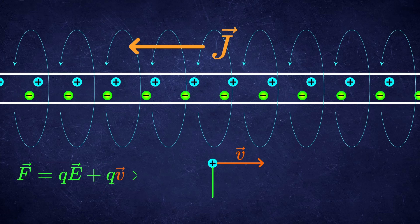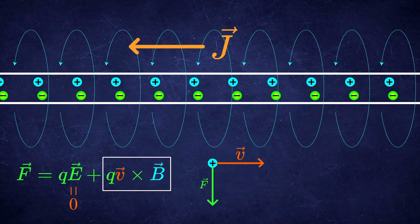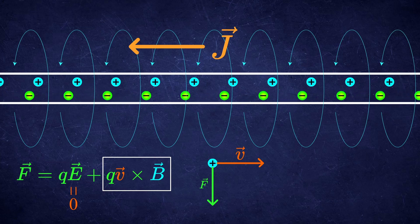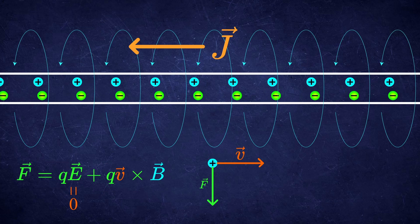And the force on the particle was given purely by the magnetic part of the Lorentz force equation, since the density of the positive charges and negative charges in the wire is the same, leaving a zero net charge of the wire.